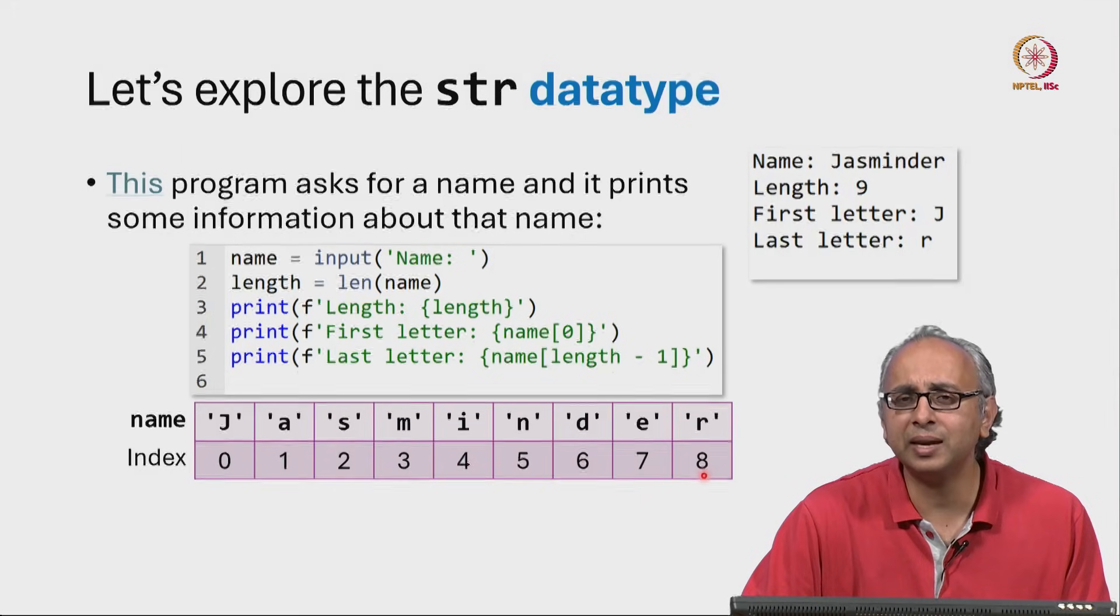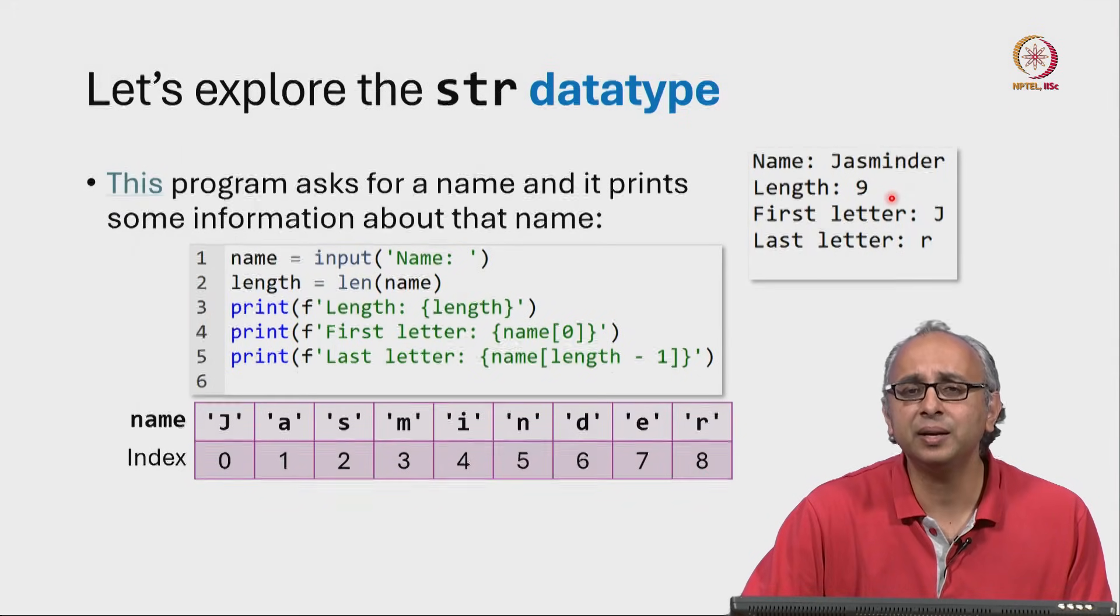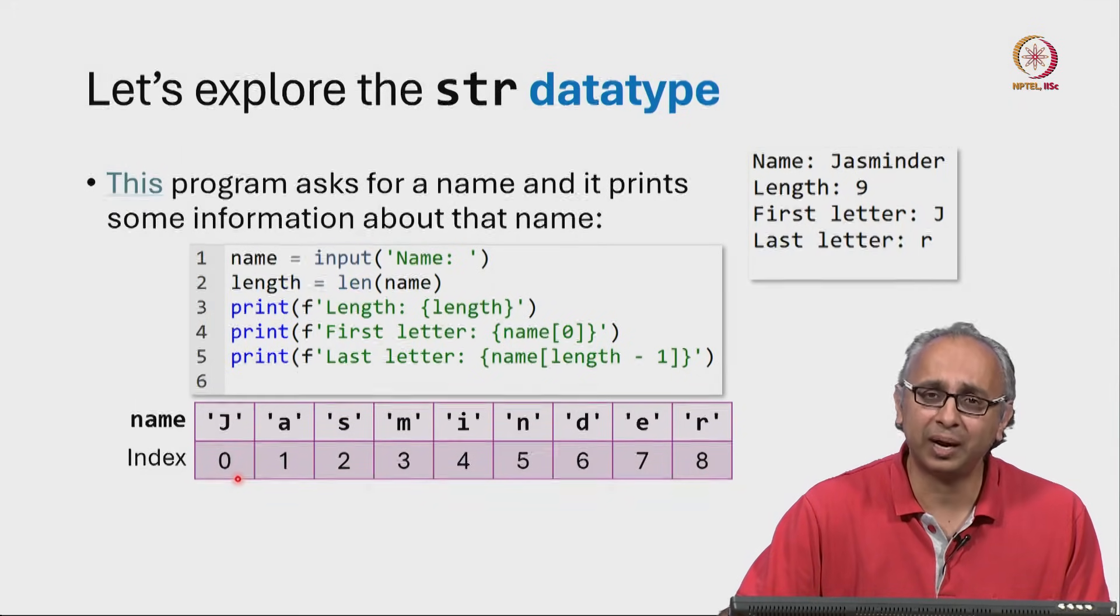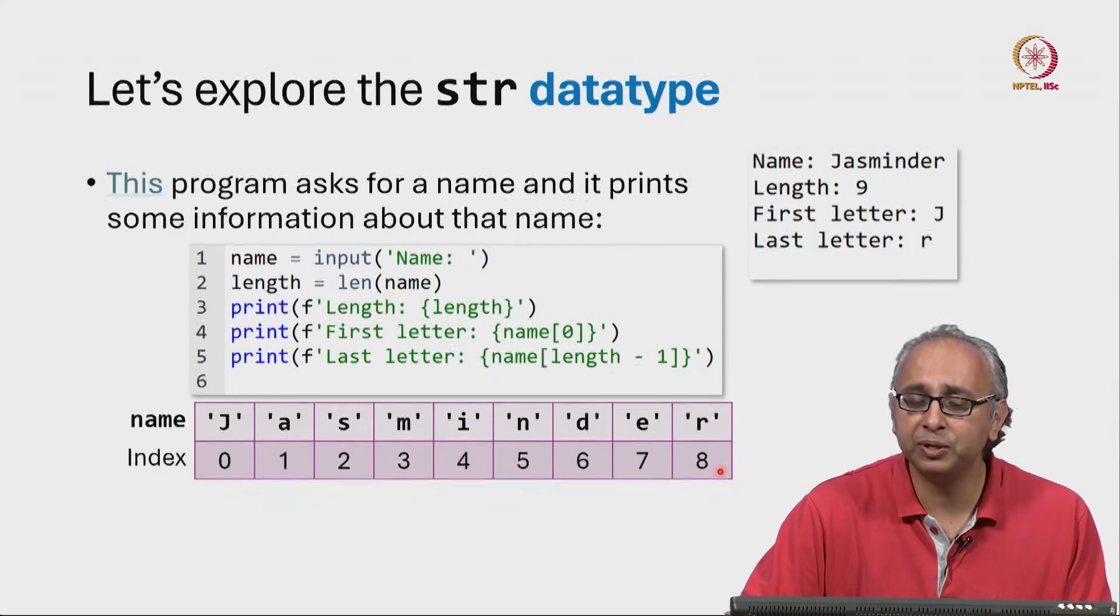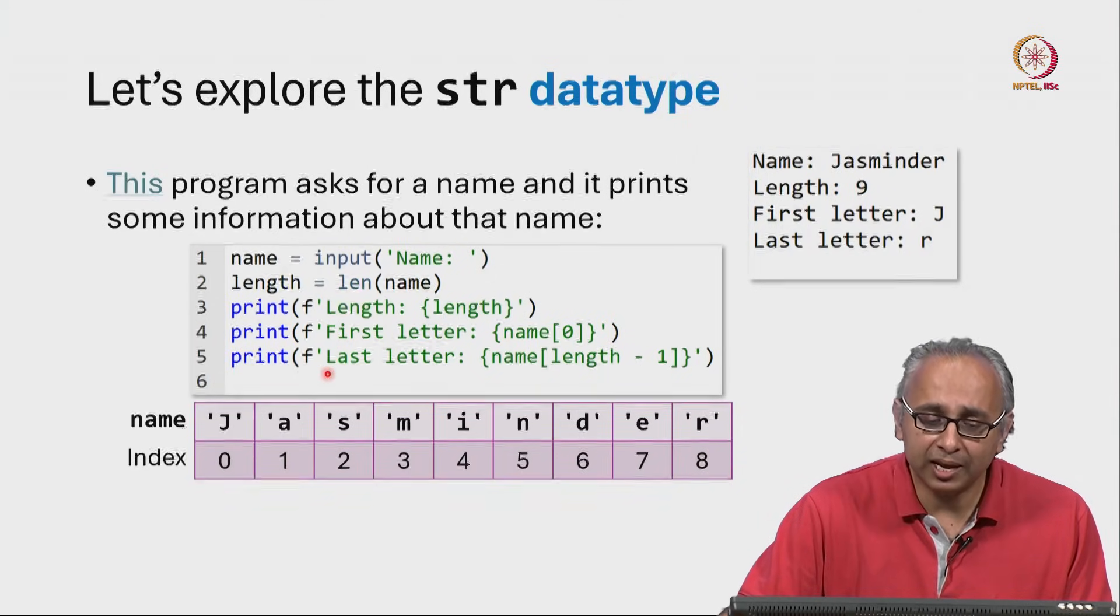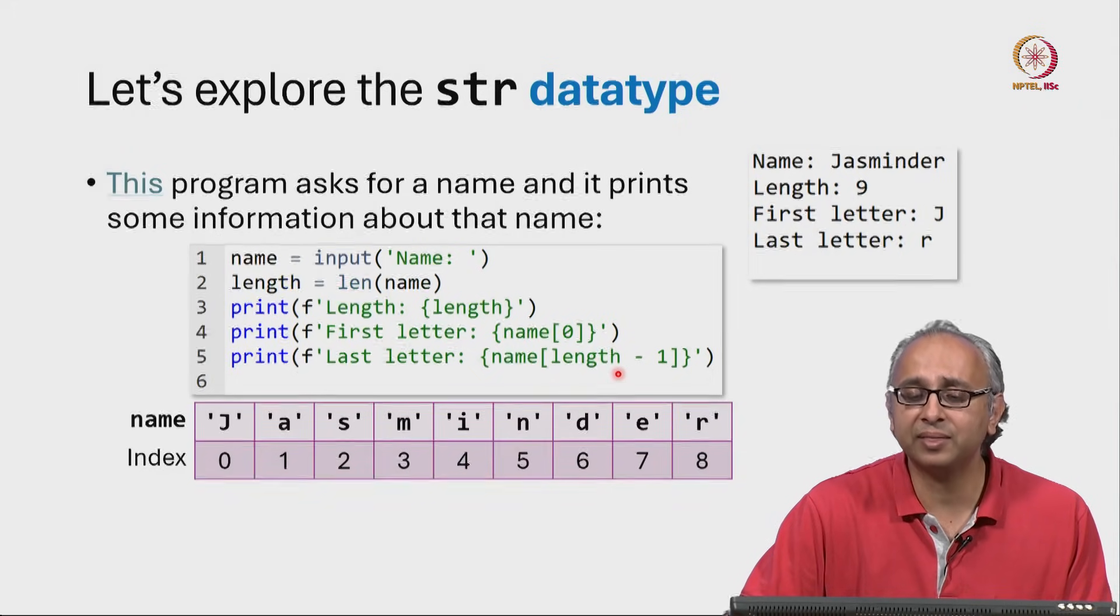Why not index 9? The length after all is 9. Well, remember we started indexing or counting from 0. So if a string has length 9, we will only go up to length minus 1. The last letter in general will be name square bracket length minus 1.